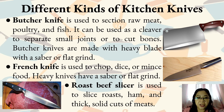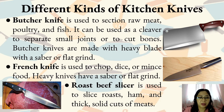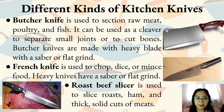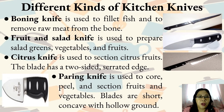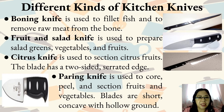French knife is used to chop, dice, or mince food. Heavy knives have a sabre or flat rim. Roast beef slicer is used to slice roasts, ham, and large solid cuts of meats. Boning knife is used to fillet fish and to remove raw meat from the bone. Fruit and salad knife is used to prepare salad greens, vegetables, and fruits.